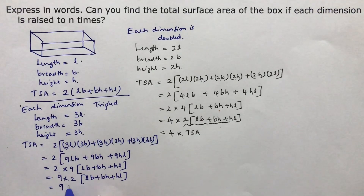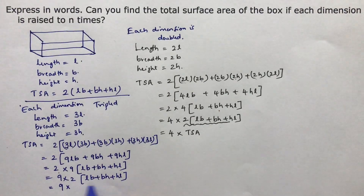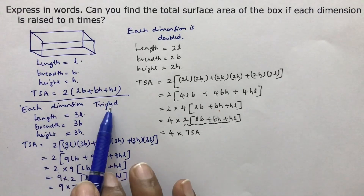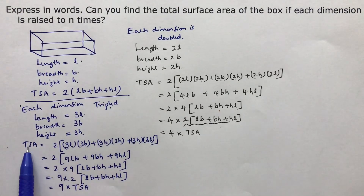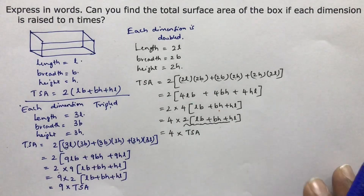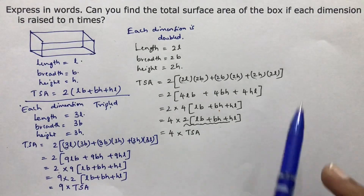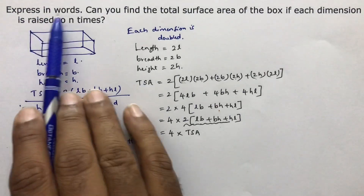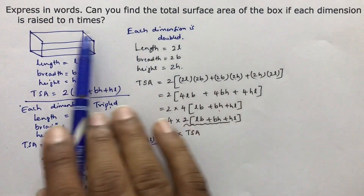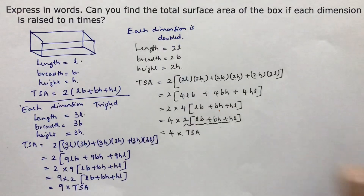This equals 9 into 2 times LB plus BH plus HL, which is 9 times the total surface area. So if each dimension is tripled, the total surface area becomes 9 times the original. In the same way, can you find the total surface area if each dimension is raised to N times?